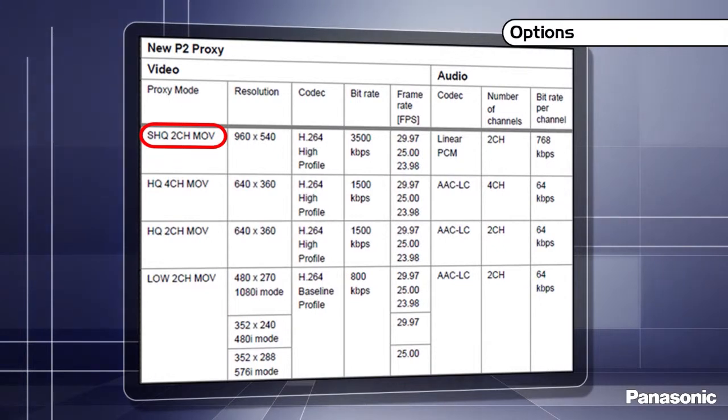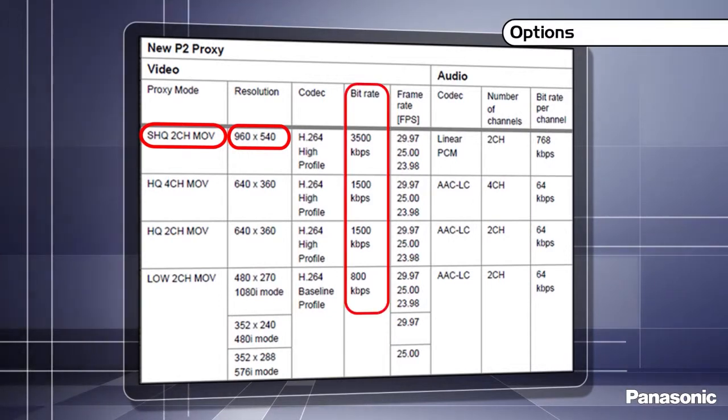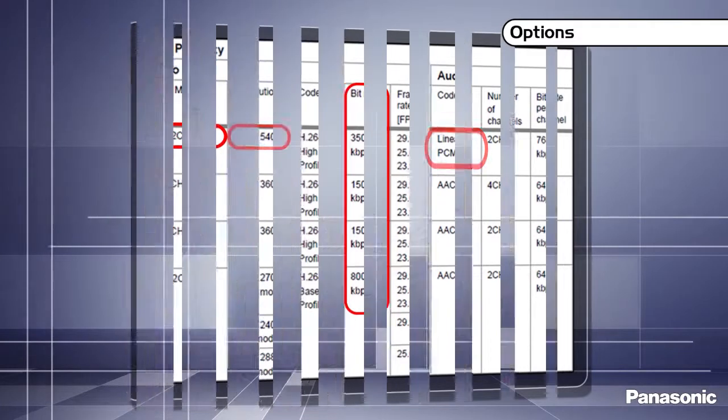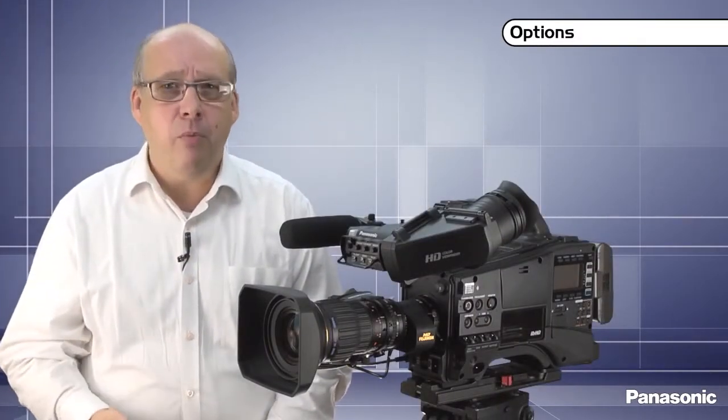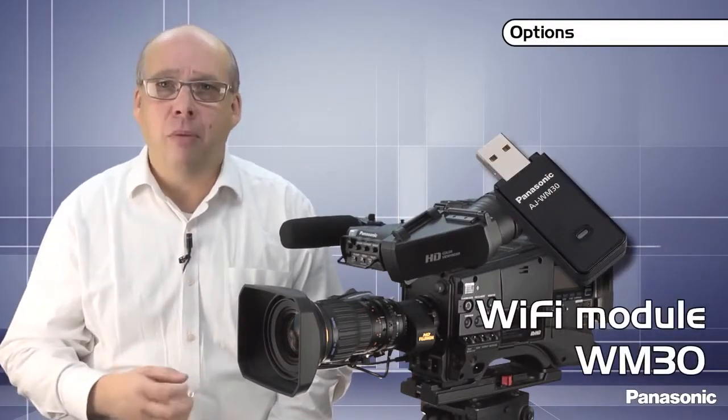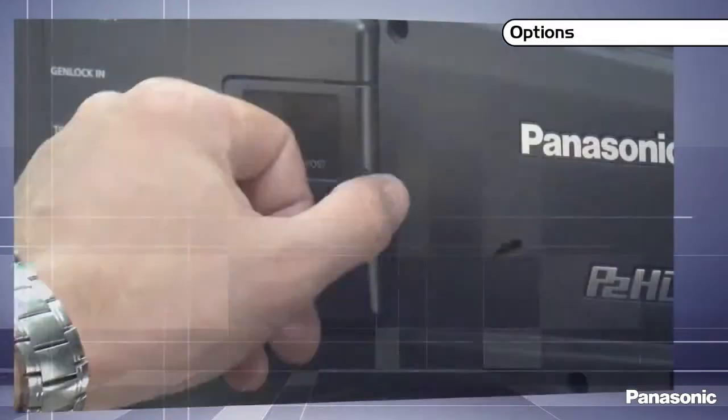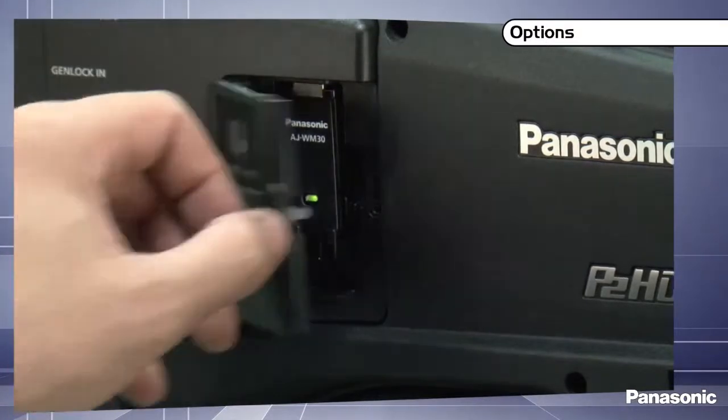Several profiles are available, the best quality being 960 x 540 at 3.5 MB per second with two 48kHz uncompressed audio tracks. Finally, Proxies enhance the camera further when equipped with the Wi-Fi module, the AJ-WM30 and the first of the software key options, the network interface.